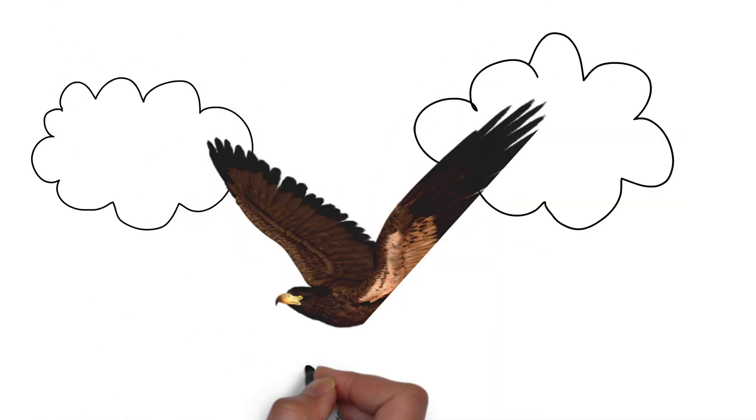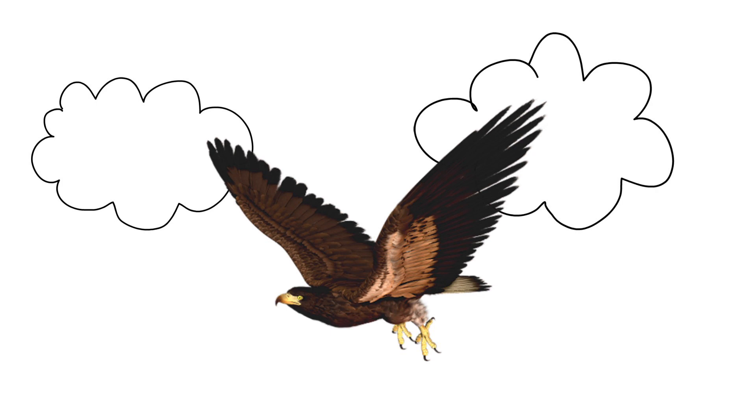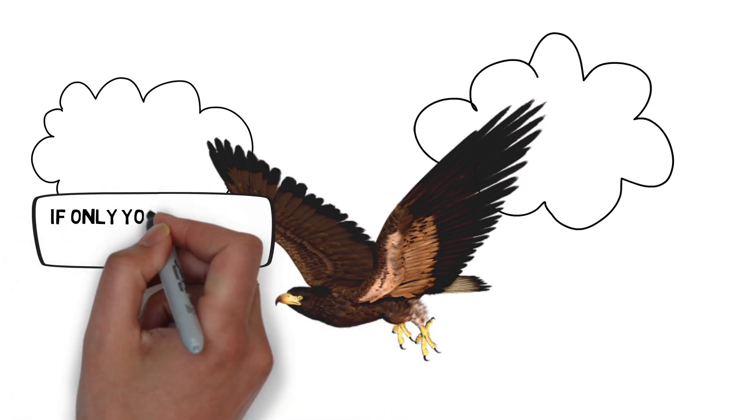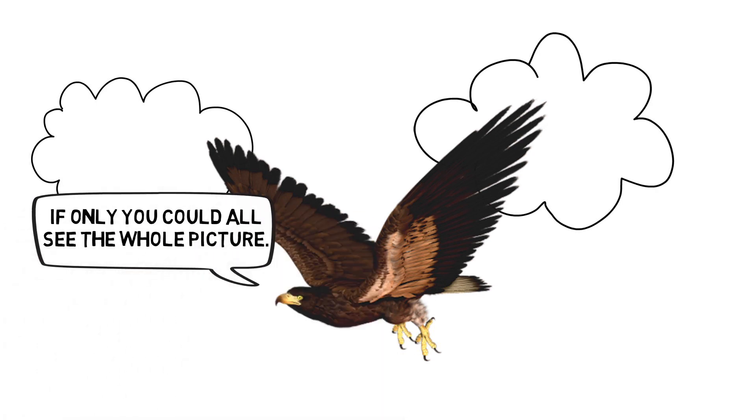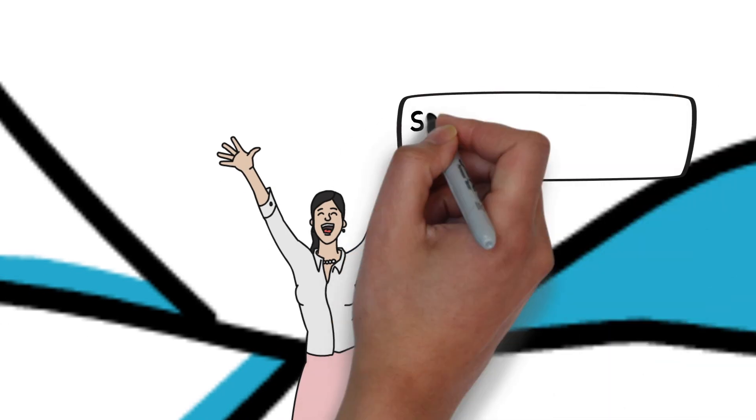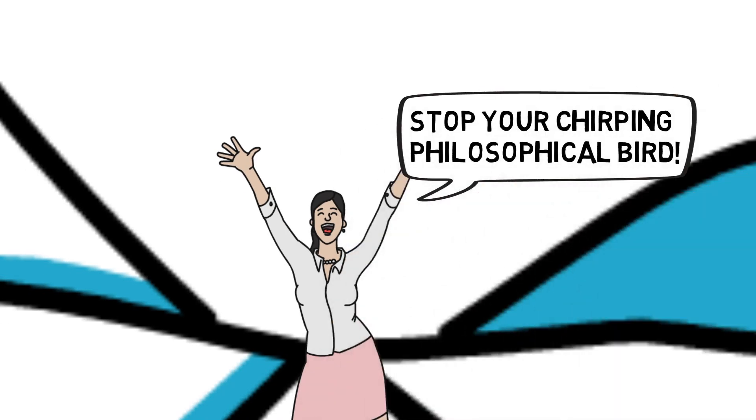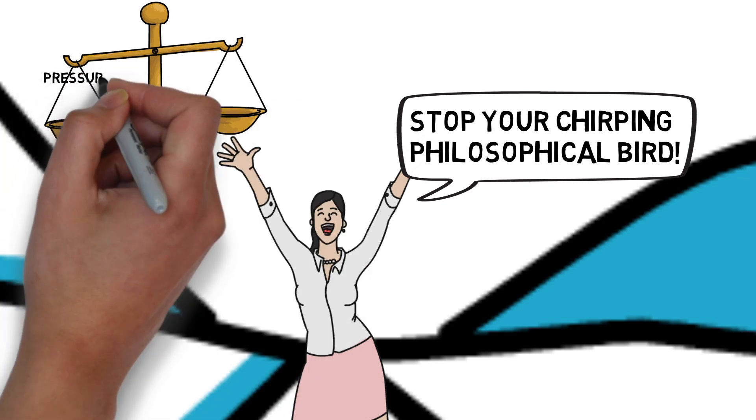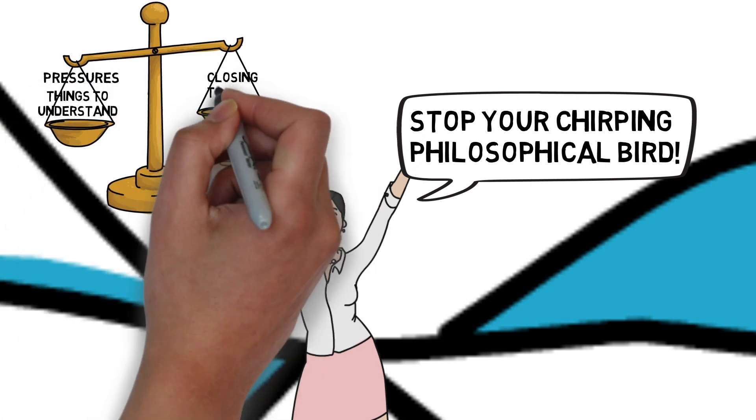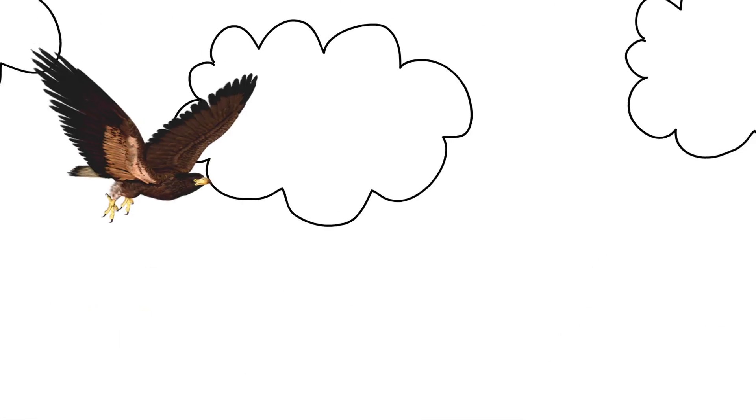Up in the sky there's a hawk that gawks at and mocks us all, because from his view this gap is so small if only we could all see the whole picture. Stop your chirping philosophical bird! You don't live on this land. There are pressures down here, there are things to understand. He says like what? And so I explain it to him like this.